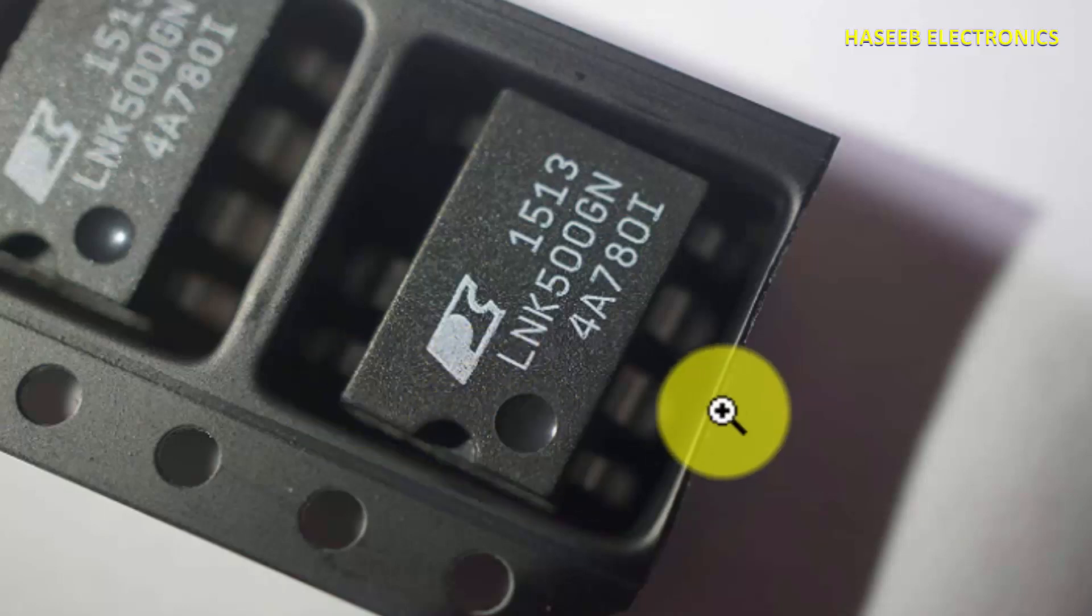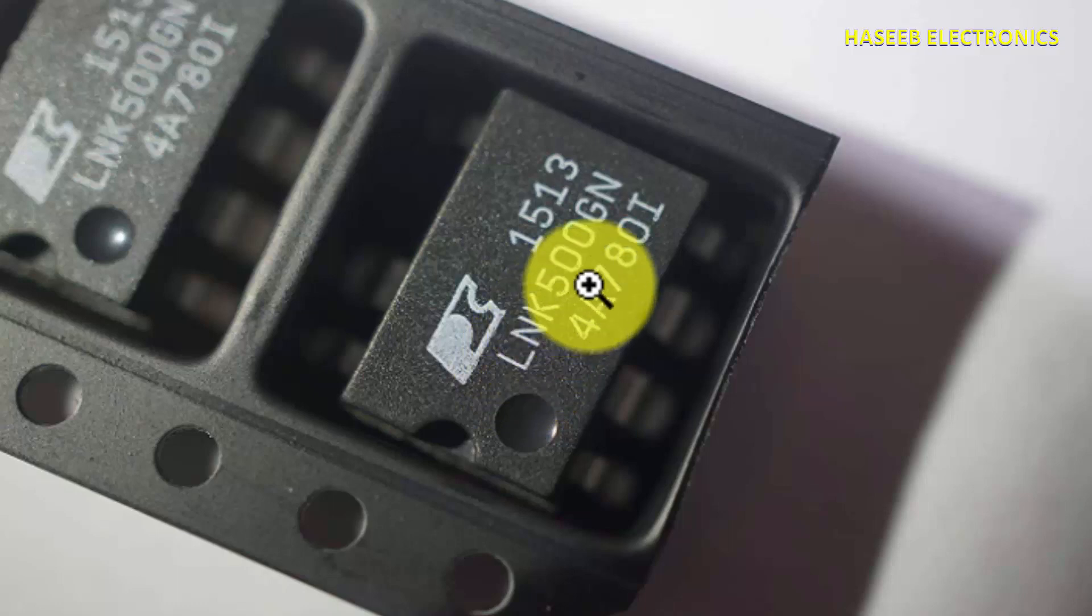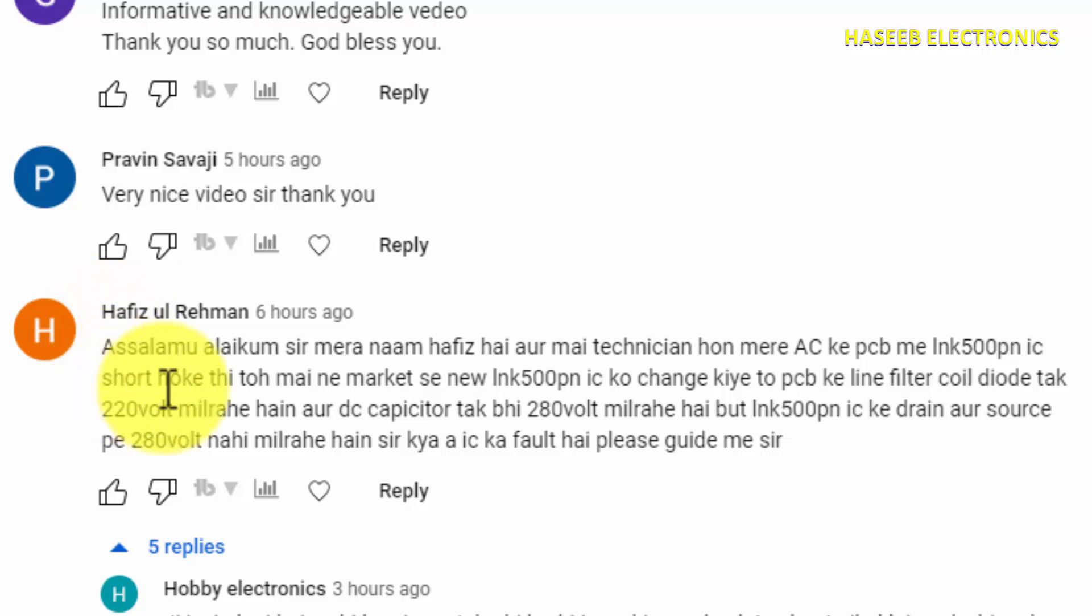Assalamualaikum warahmatullahi wabarakatuh, friends, welcome back to my channel. Today we will discuss LNK500 PN IC. It is available in SMD and DIP package as an offline switcher. Basically, this is a question from my viewer. He is saying that he has a control circuit for an air conditioner that is using LNK500 PN IC. This IC got short circuit, and after that he replaced it. 280 volts are available at the bulk capacitor, but he is not receiving voltage at the drain pin of LNK500.